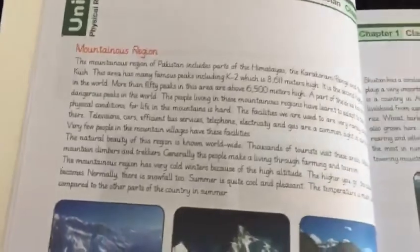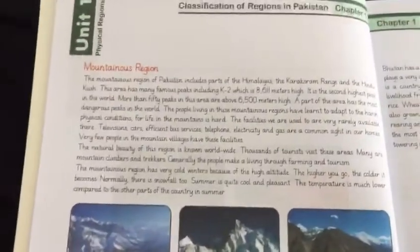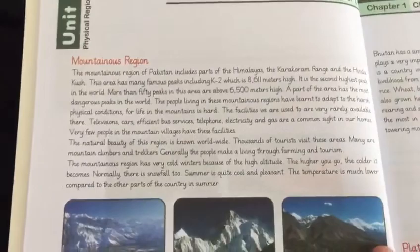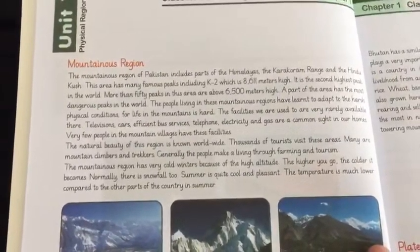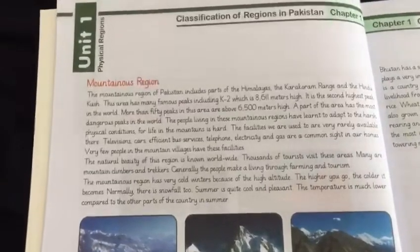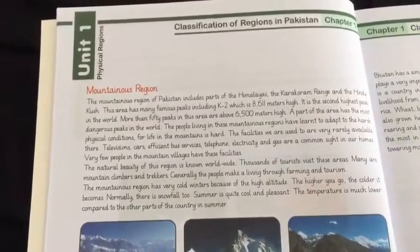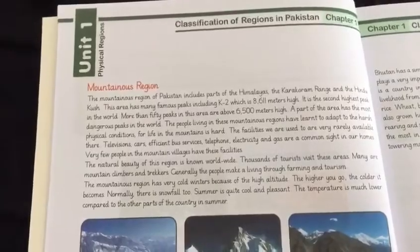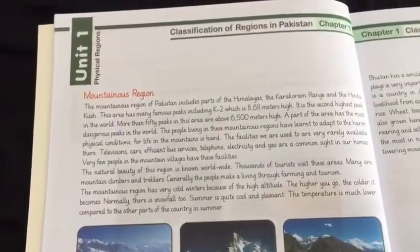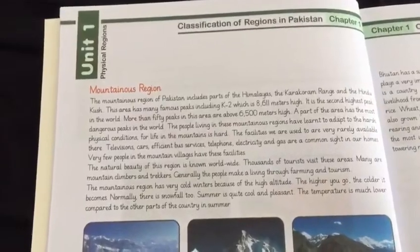First of all we will be reading about the mountainous region. The mountainous region of Pakistan includes parts of the Himalayas, the Karakoram Range, and the Hindu Kush. These are all types of mountain ranges, meaning there is not only one single mountain but a range — multiple mountains.